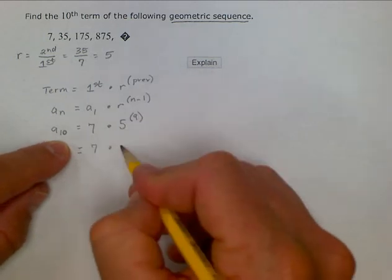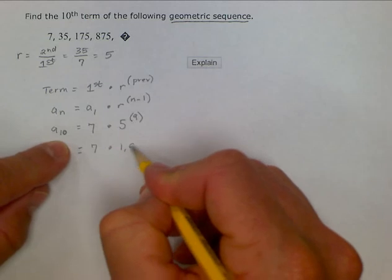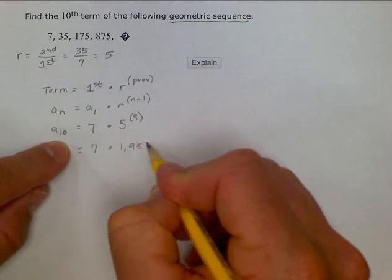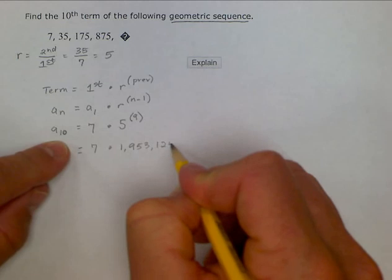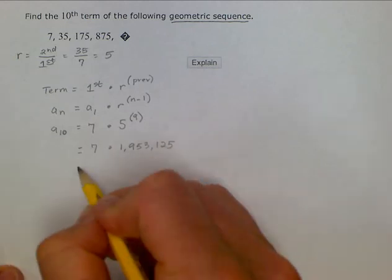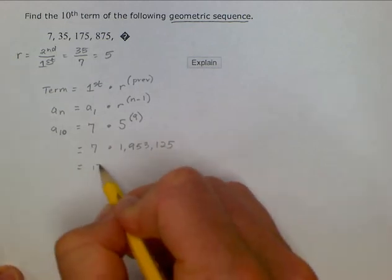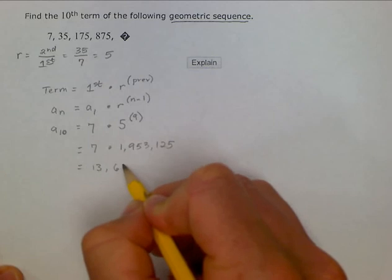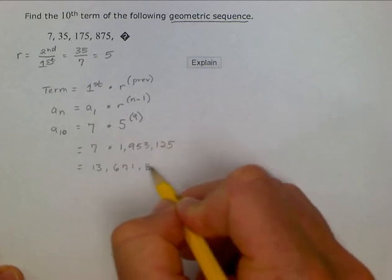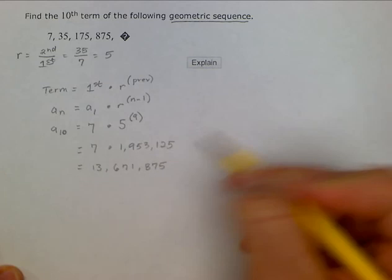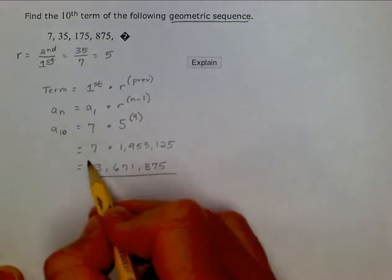which if you plug that into your calculator, is going to be 1,953,125. When you multiply that by 7, it becomes 13,671,875. And that is our tenth term.